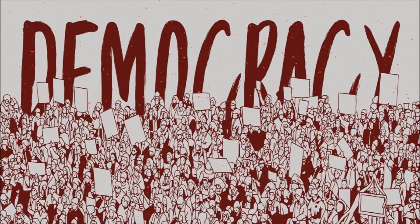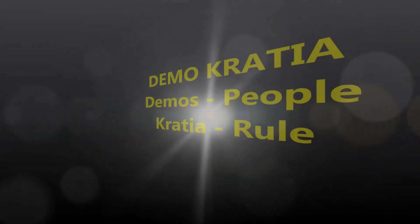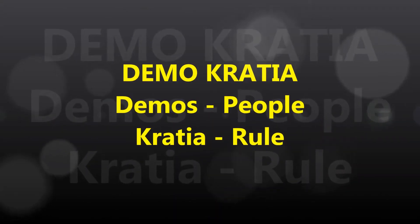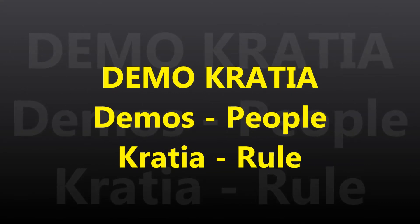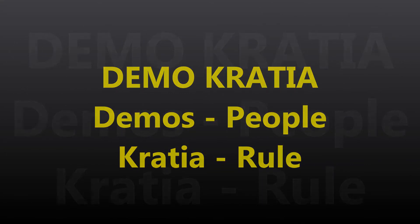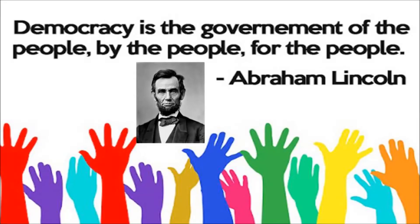Let's understand with the definition of democracy. The word democracy has been derived from two Greek words: demos and kratia. Demos means people, kratia means rule — so democracy means the rule of the people. One more definition was given by former American president Abraham Lincoln: democracy is the government of the people, by the people, and for the people.